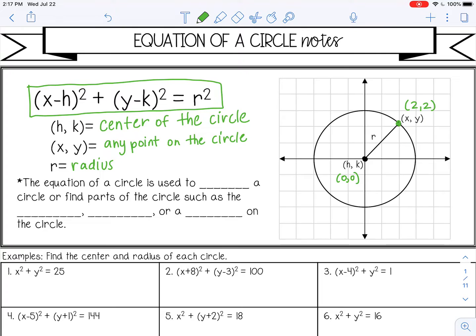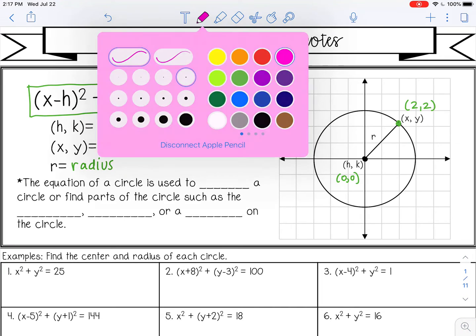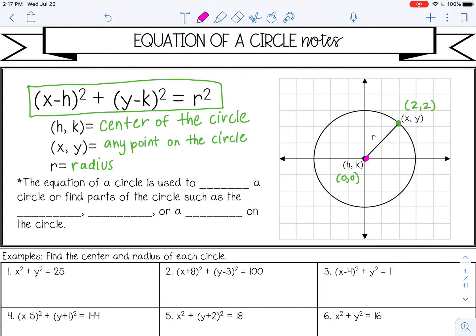And the equation of the circle is actually derived from the Pythagorean theorem. Because if you connect the center and one point on the circle, and then I'm going to draw a right triangle here. So if you think about a squared plus b squared equals c squared, so c is your radius, your hypotenuse. And then a and b are your distances.